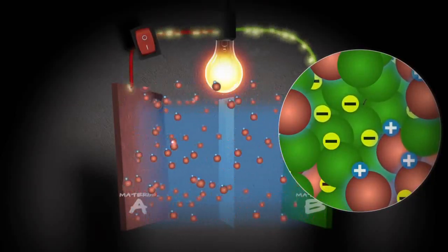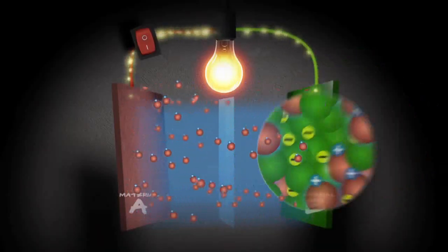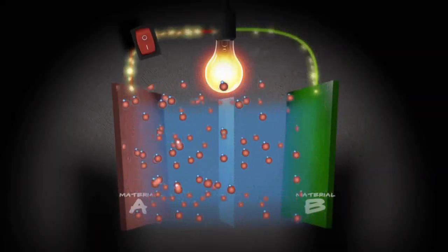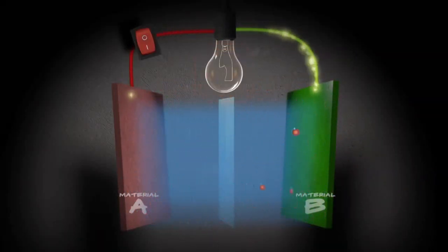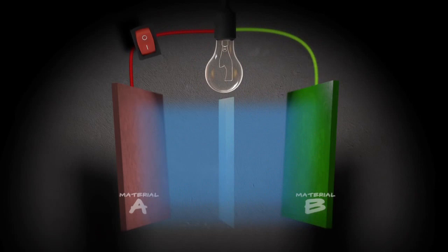As the battery discharges, electrons and ions are making their way from A to B. When you can't fit any more material A ions into material B, the battery is fully discharged.